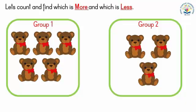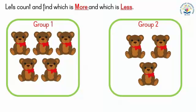Let's understand this concept with the help of some other examples. As you can see there are two groups. Let's count and find which is more and which is less. Look at group number one. Count the bears with me: one, two, three, four, five. How many bears are there? There are five bears.